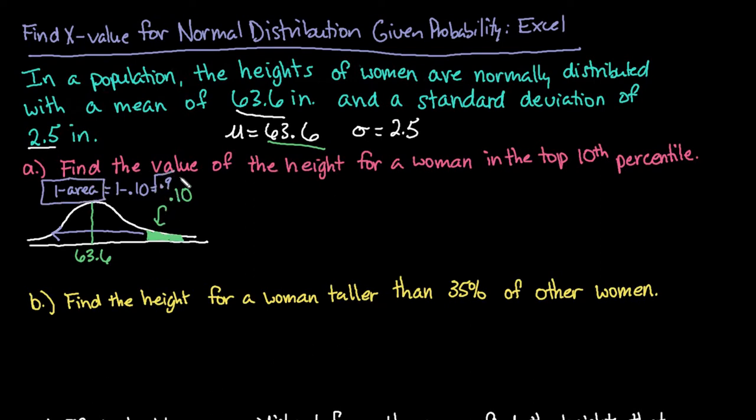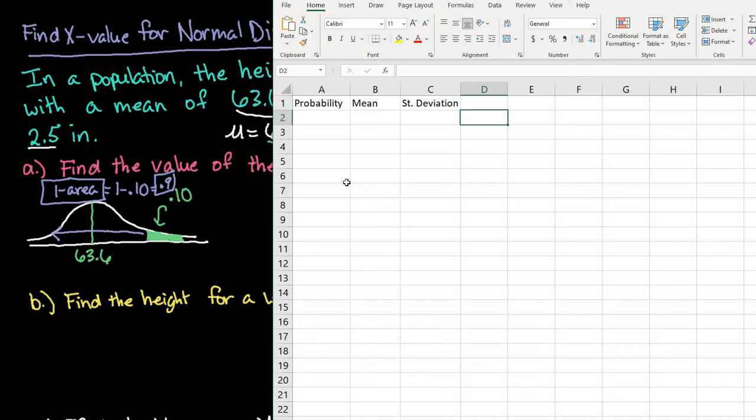So the things that we need to know is we need to know the 0.9, the 63.6, and the 2.5. So let me grab Excel and the probability is going to be our 0.9. And like I said it's at this point right here if it was difficult to do.